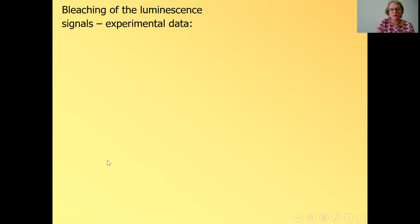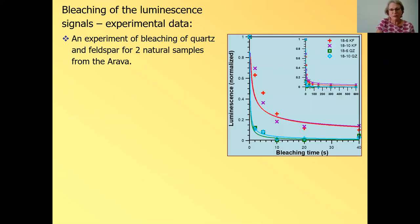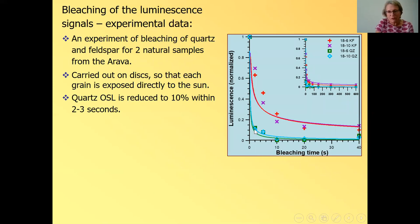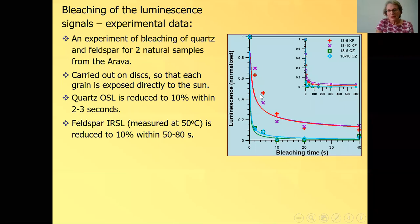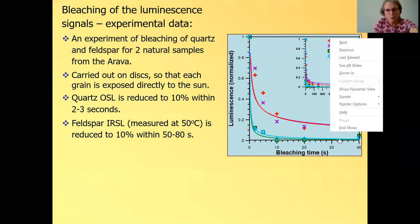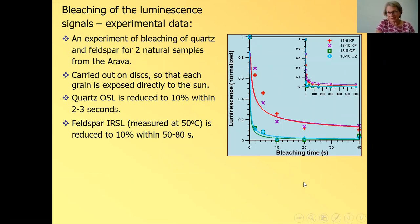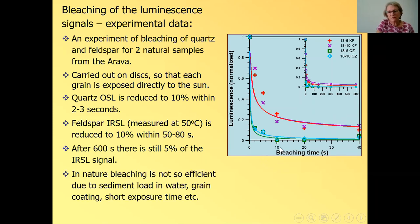Another aspect I want to talk about is the bleaching of the luminescent signal. Bleaching, it's an experiment of bleaching of quartz and feldspars for two natural samples from southern Israel. And what we did is we took a sample, prepared aliquots and put them in the sun for different times and then measured the luminescent signals. So this is quartz OSL. And you can see that the quartz OSL is reduced to 10% of the original signal in something like two or three seconds, very, very fast. This is the feldspars and we measured the IRSL at 50 degrees and it's reduced to 10% a little bit slower, between 50 and 80 seconds. But what's interesting that the feldspars, even after 10 minutes of bleaching still has some residual signal, whereas the quartz OSL is bleached to essentially zero. So different minerals have different properties.